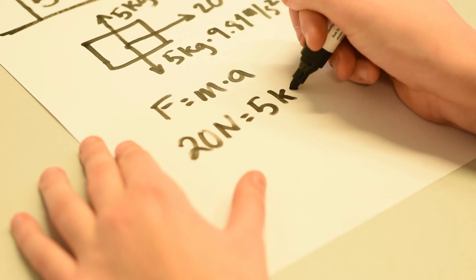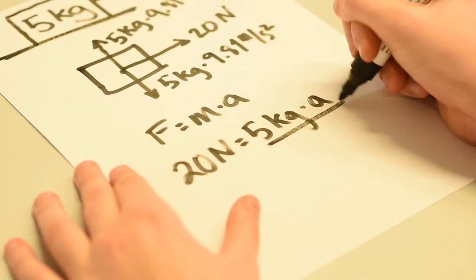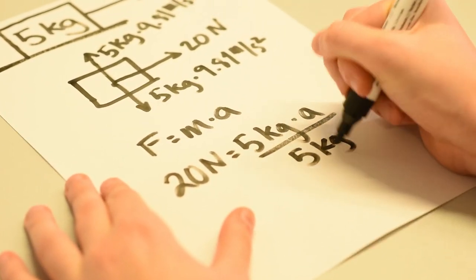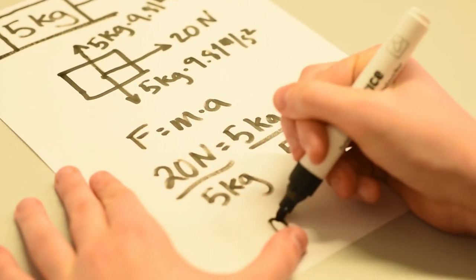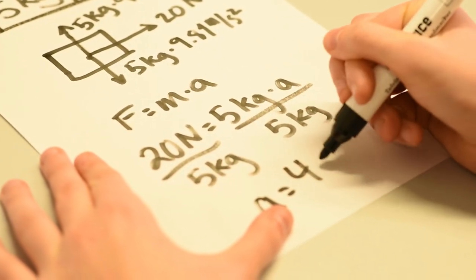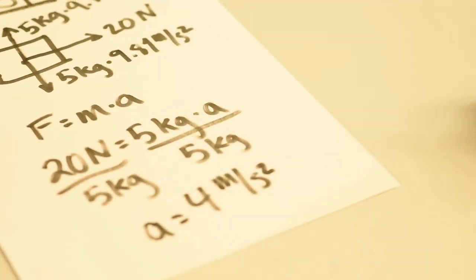And then if we just divide by 5 on both sides, we get the acceleration equal to 4 meters per second squared. Looks like you understand it. Awesome. Thank you so much for your help. You're very welcome.